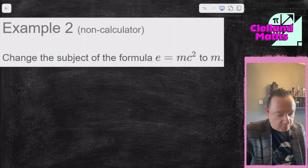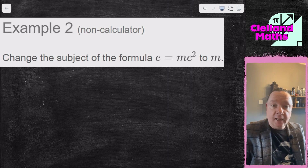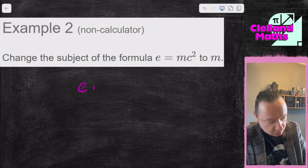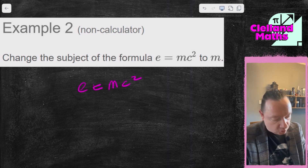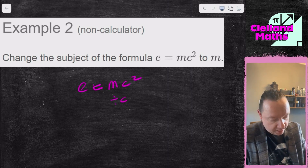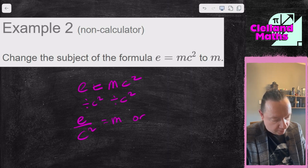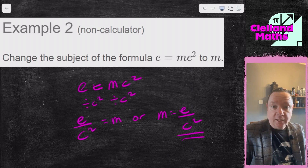Example 2: change the subject of the formula E = mc² to m. So we've got E equals mc². I want m on its own, so I need to divide by c² because it's next to m. So E over c² equals m, or more properly, m equals E over c². And we're done.